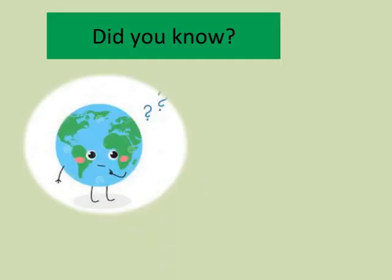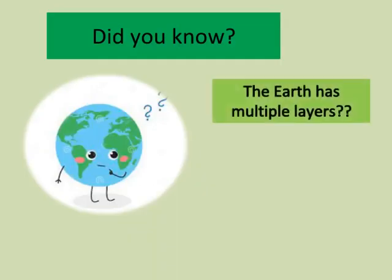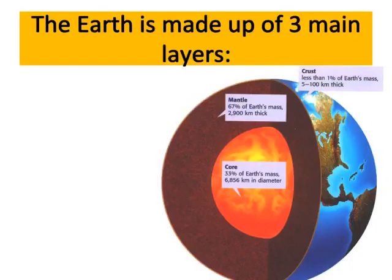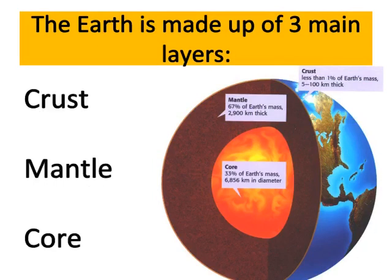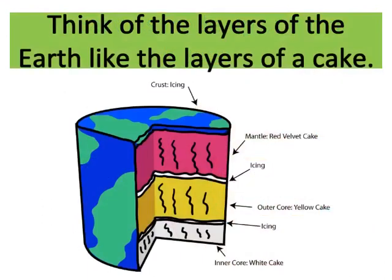Did you know? The Earth has multiple layers. The Earth is made up of three main layers: crust, mantle, and core. Think of the layers of the Earth like the layers of a cake.